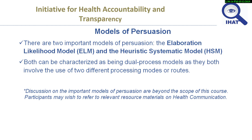There are two models of persuasion: the elaboration likelihood model and the heuristic systematic model. Both can be characterized as dual process models, as they both involve the use of two different processing modes or rules. Discussion on these important models of persuasion is beyond the scope of this course, and participants may wish to refer to relevant resource materials.